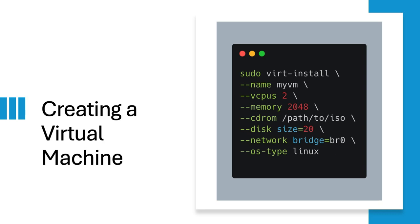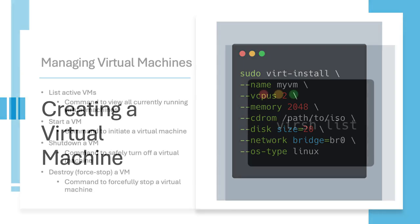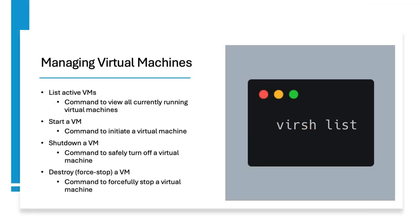To create a virtual machine from the command line, you can use the virt-install command. Here are some basic VM commands: list active VMs, start a virtual machine, shut down a virtual machine, and finally how to destroy a virtual machine.